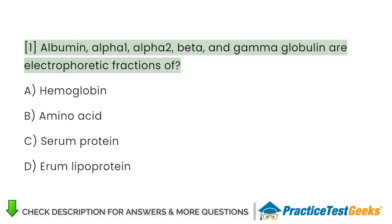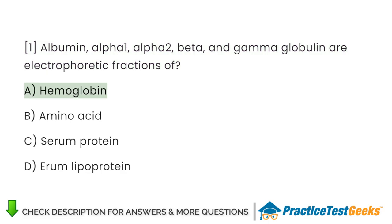Albumin, alpha-1, alpha-2, beta, and gamma globulin are electrophoretic fractions of: A.